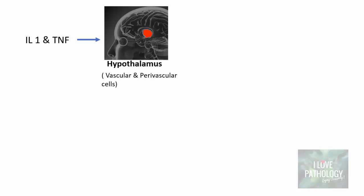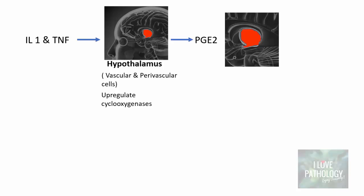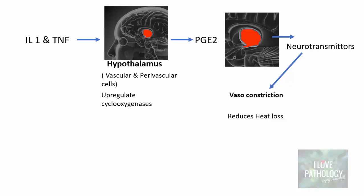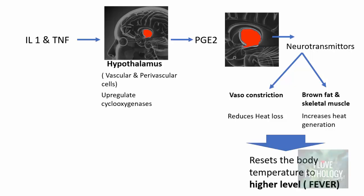The vascular and perivascular cells of the hypothalamus are more sensitive to these cytokines. Because of upregulation of cyclooxygenases they synthesize prostaglandins, and these prostaglandins act on the hypothalamus to release various neurotransmitters. These neurotransmitters cause vasoconstriction, which reduces loss of heat, and through brown fat and skeletal muscle they also increase heat generation in the body. The combined effect resets the body temperature to a higher level — that is what we refer to as fever.